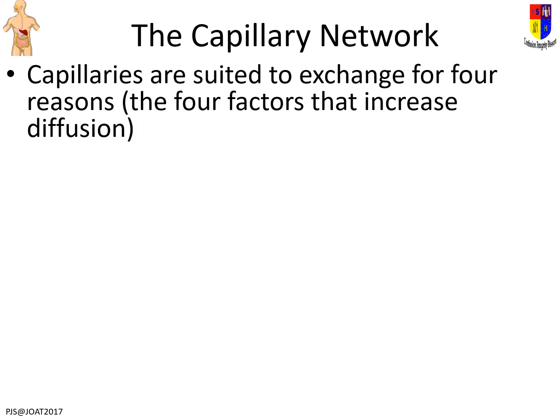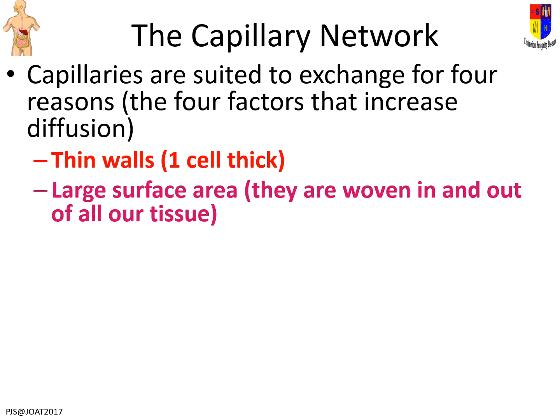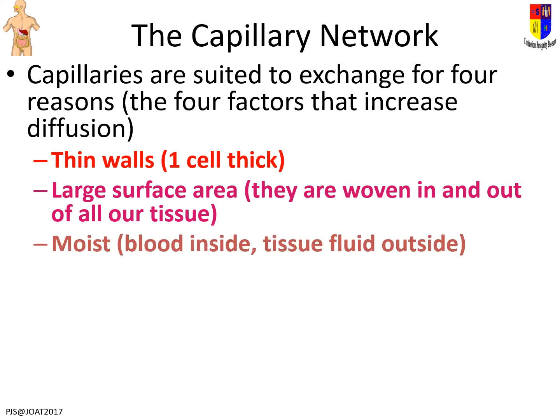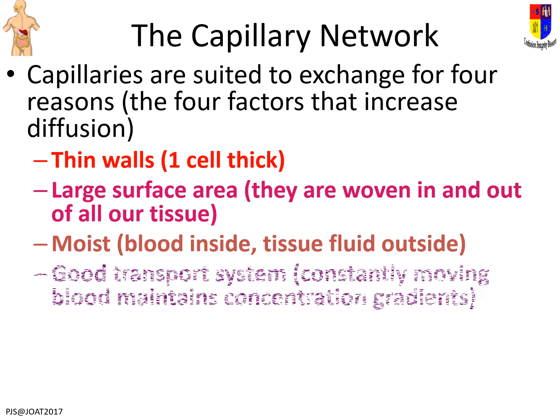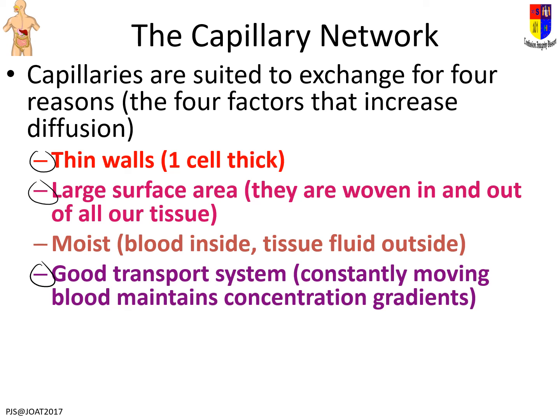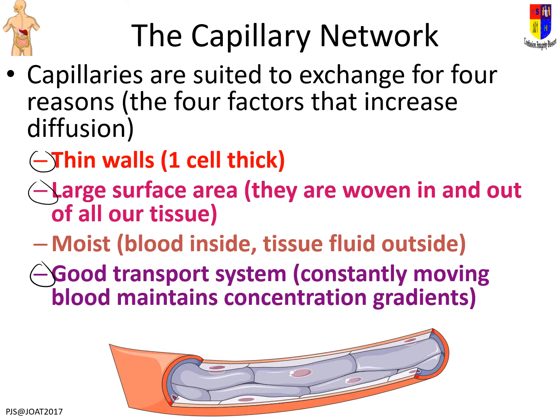The capillary network is essential for exchange. The features that increase diffusion are: thin walls (one cell thick), a large surface area because they are tiny so you can have many more of them, a liquid medium inside (blood) with tissue fluid outside which helps dissolve substances, and a good transport system — blood constantly moving through brings in fresh oxygenated blood, maintaining a high concentration gradient. The three key features you are expected to give are: a good transport system, a large surface area, and thin walls. You will also look at these when studying exchange and absorption in a later topic.